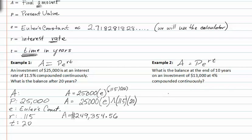In example two, we have a balance at the end of ten years. We need to find out what the balance at the end of ten years is on an investment of thirteen thousand dollars. So again, we need to find A, that's what we don't know in each situation. P is the amount invested, E is Euler's constant, which you'll learn more about in later classes. And the rate is point zero four and the time is ten years.